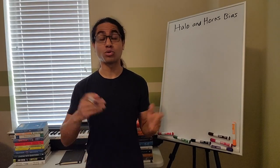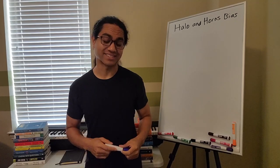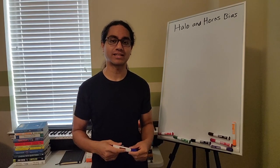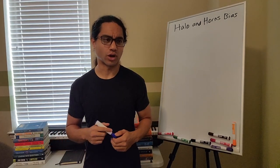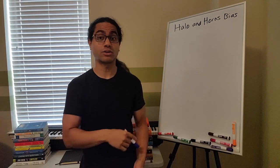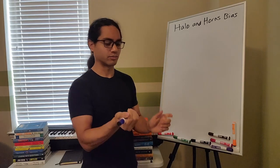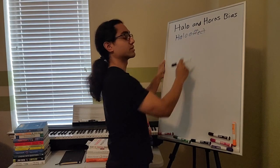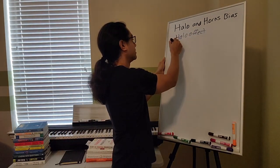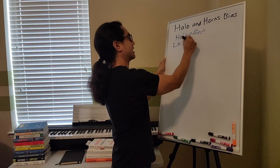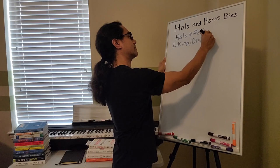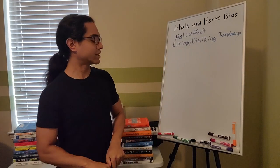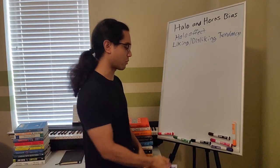Welcome to the next in your course on cognitive biases. Today we are going over the halo and horns bias — that's what I like to call it. Sometimes you'll hear it referred to as just the halo effect, or also the liking/disliking tendency. I like halo and horns bias because it gives it a little bit of a romantic flair — it's a little dramatic and it's easy to remember.